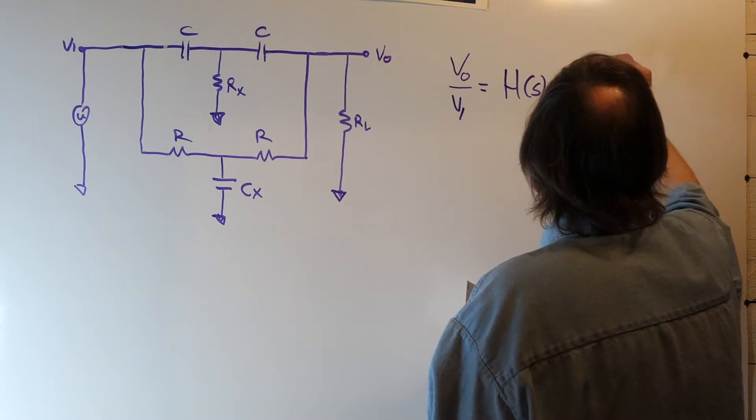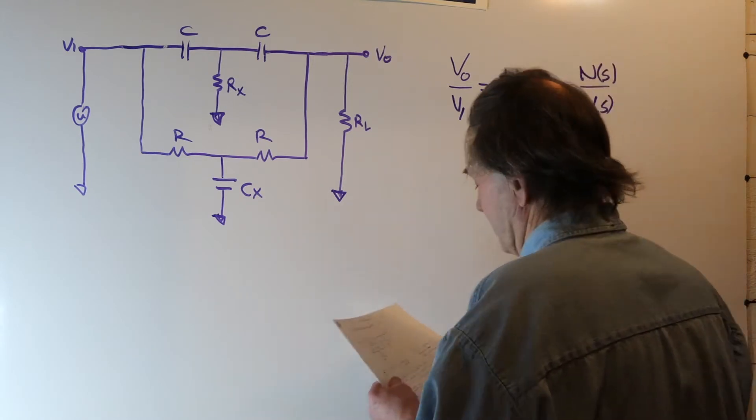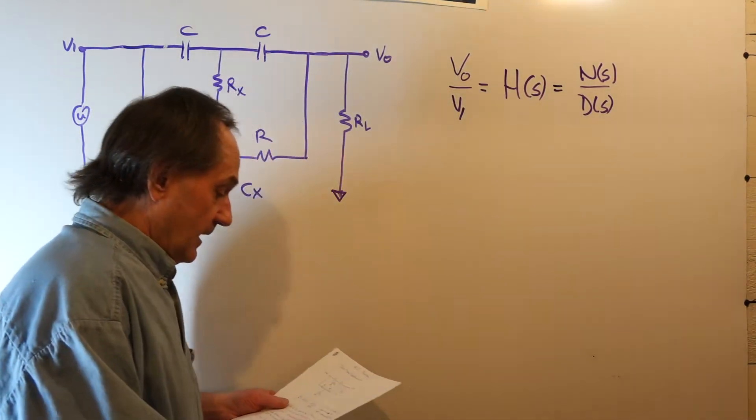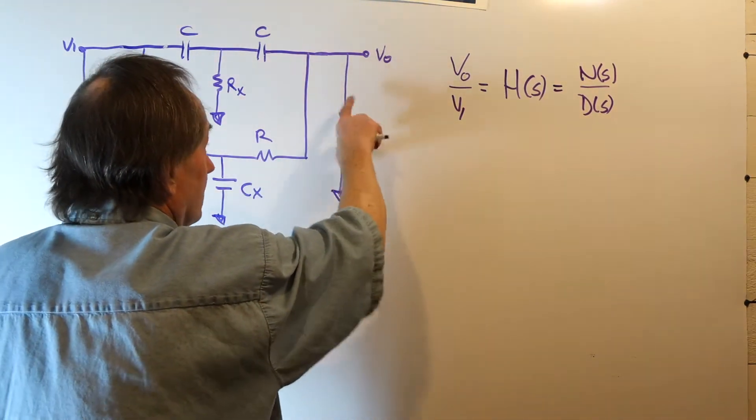You'll have some numerator polynomial in S and a denominator polynomial of S. The denominator polynomial we call the system function, and it is dependent on RL, the loading of the network.